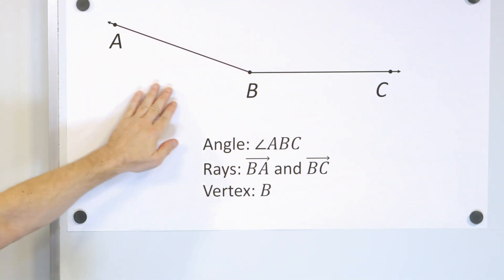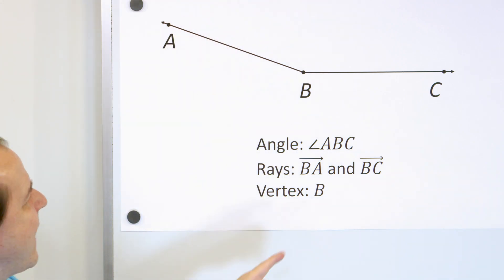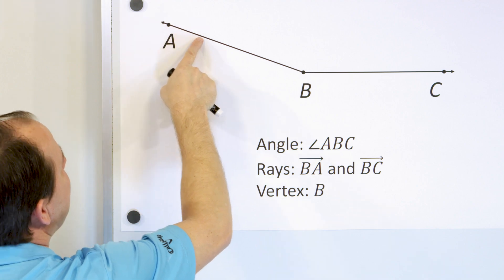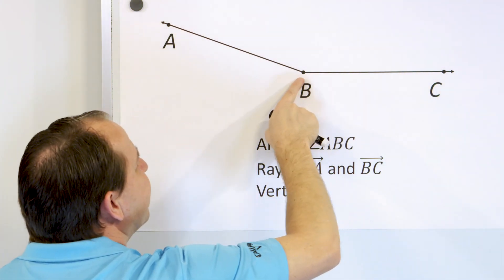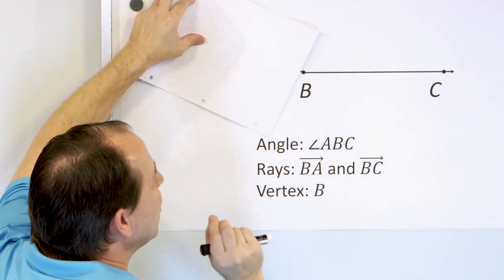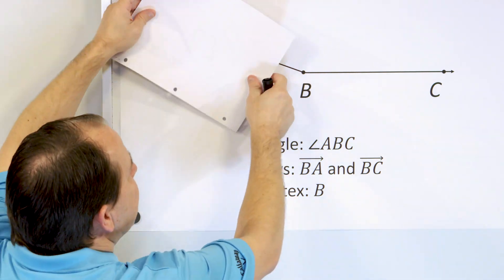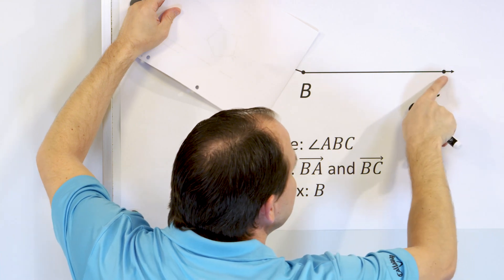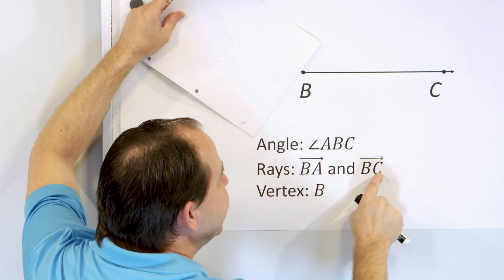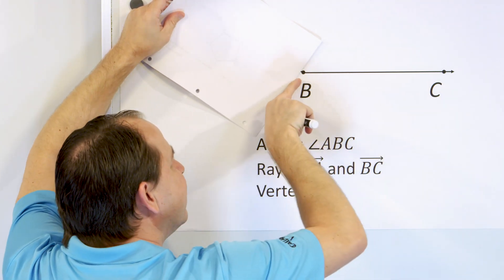So let's start by looking at an actual diagram. Here we have a point B. The point is represented in geometry by a dot. We have a point A and we have a point C. Now these are obviously joined together by arrows. Notice the arrow is only on one side here, and on the other side there's no arrow. This thing from B to C is called a ray. A ray starts at B and goes on and on forever through the point C, and the arrow means it goes forever.